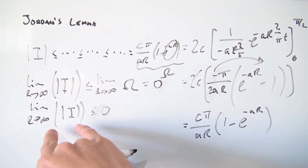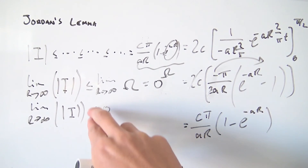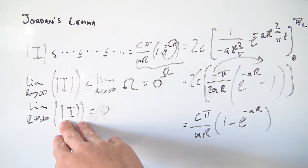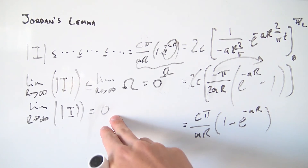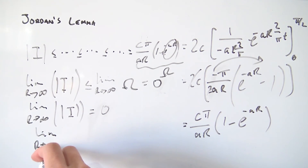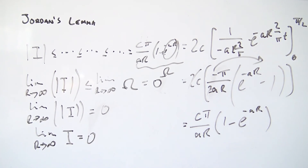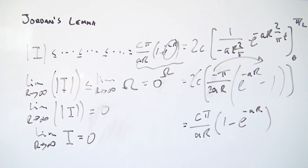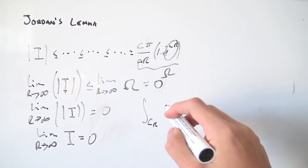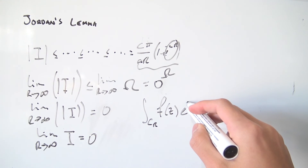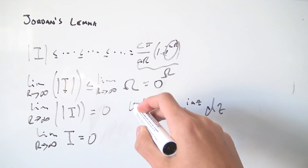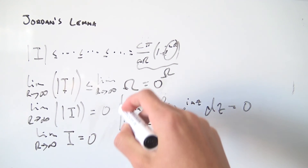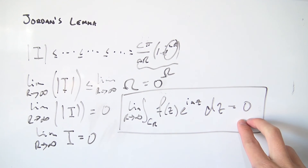So the limit as r → ∞ of |I| is less than or equal to zero. But |I| is always non-negative, so the only possibility is that it equals zero. Therefore the limit as r → ∞ of I itself is zero. And since I was our parameterized integral — the same as our original integral — we conclude that the limit as r → ∞ of the integral over C_r of f(z)e^(iaz) dz equals zero. That completes the proof of Jordan's lemma.